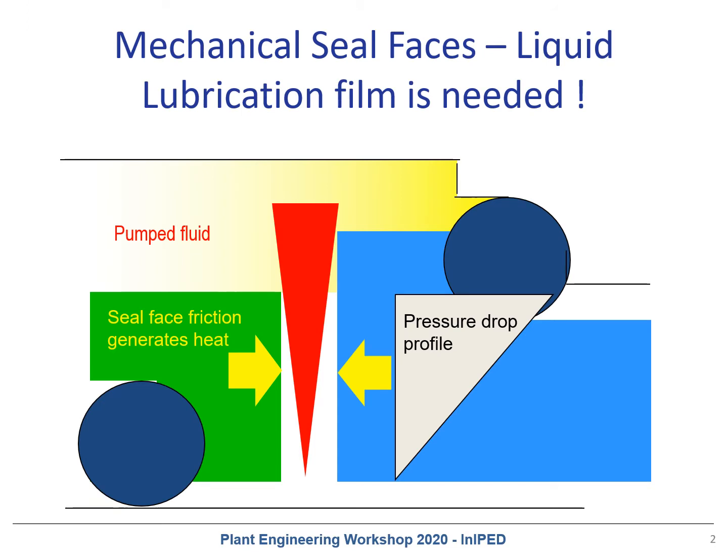Mechanical seals consist of two seal faces sliding on each other, shown here in green and blue. The pump fluid itself provides the required liquid lubrication, shown here in red. Seal face friction generates heat, and as pressure drops in the sealing gap, light hydrocarbons with low vapor pressure margins start to vaporize.